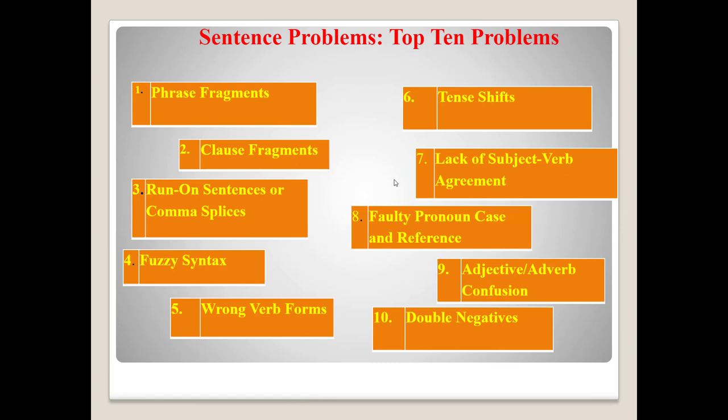Let's talk about sentence problems. Top 10 problems. First, phrase fragments: a sentence has to have a subject and a verb. A phrase can lack a subject and a verb, but a complete sentence needs both. Find phrase fragments and edit to include each in a sentence that contains a subject and a verb. For example — Faulty: 'She never talks about her inner feelings. Her feelings of fear or of joy.' Revised: 'She never talks about her inner feelings of fear or of joy.'